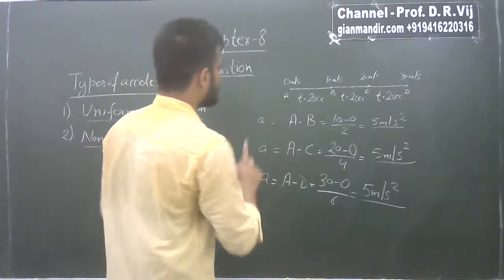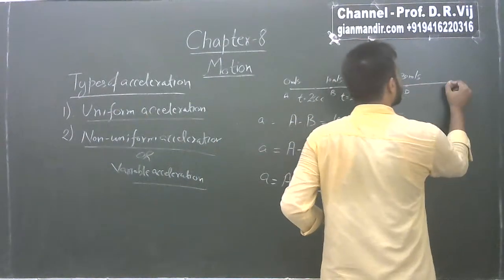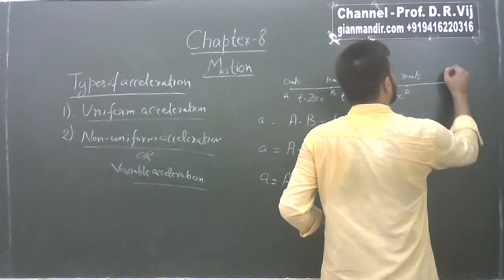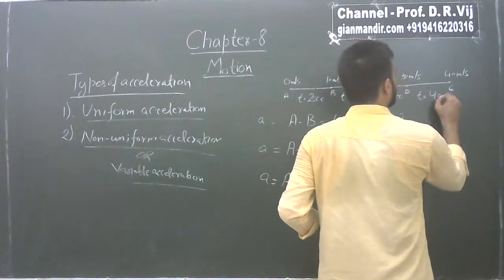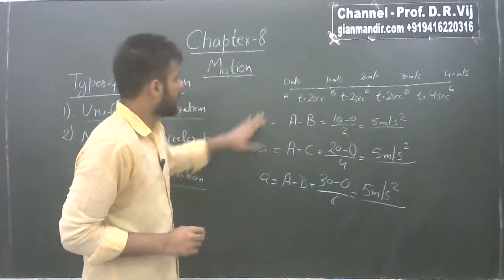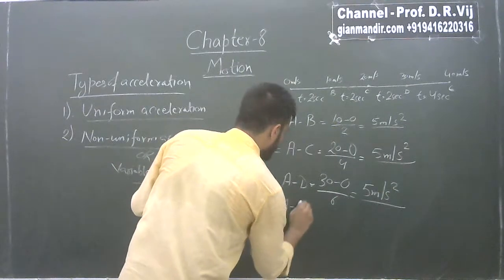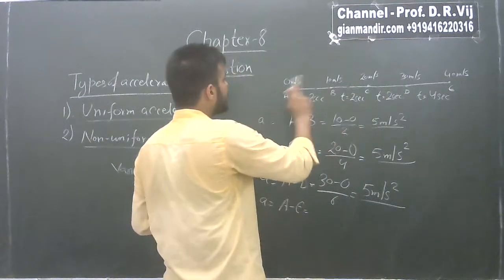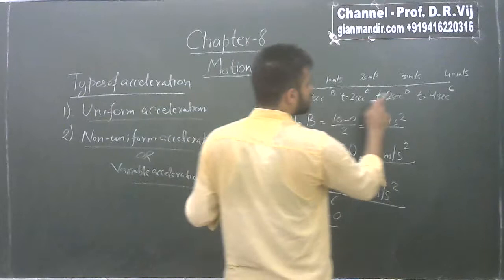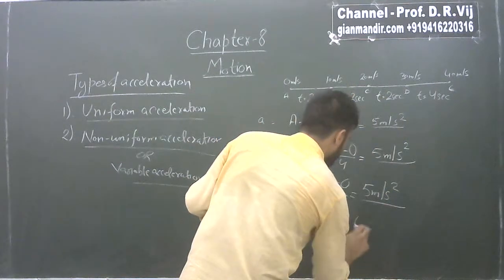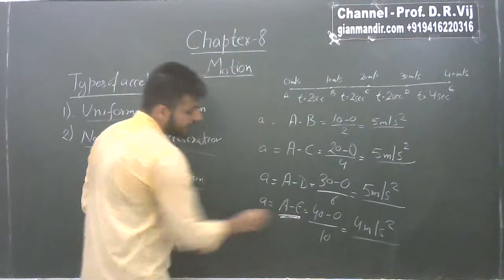Now for non-uniform acceleration, let's take the same example. Say from D to E the velocity becomes 40 m/s, but the time taken from D to E is 4 seconds. From A to E: acceleration = (40 − 0) / (2+2+2+4) = 40 / 10 = 4 m/s². Now the acceleration has changed compared to before.